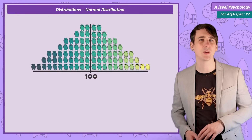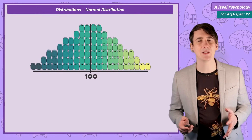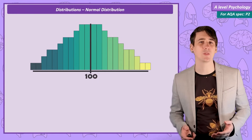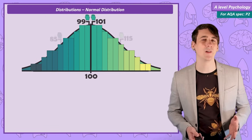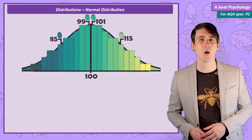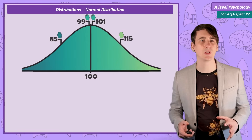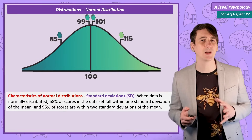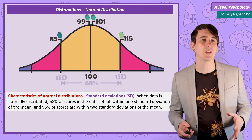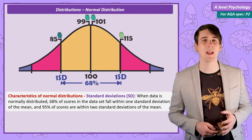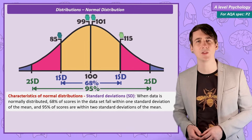Let's consider the normal distribution in terms of IQ again. The most frequent score is 100, and as each side of the curve is symmetrical, someone is as likely to have a score of 99 as 101, or as likely to score 85 as 115. Most scores are close to the centre. When data is normally distributed, we can say how far a particular score is from the mean by stating its standard deviation. 68% of scores are within 1 standard deviation, 95% are within 2 standard deviations, and 99.7% are within 3 standard deviations.